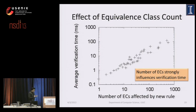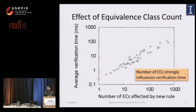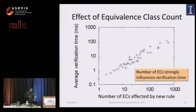The number of equivalence classes strongly affects VeriFlow's running time. However, we observed that these cases are quite rare in the data trace. Even when we have a large number of equivalence classes, we can run checks in parallel and check rules without blocking them from being sent to the network in order not to disturb network operation.